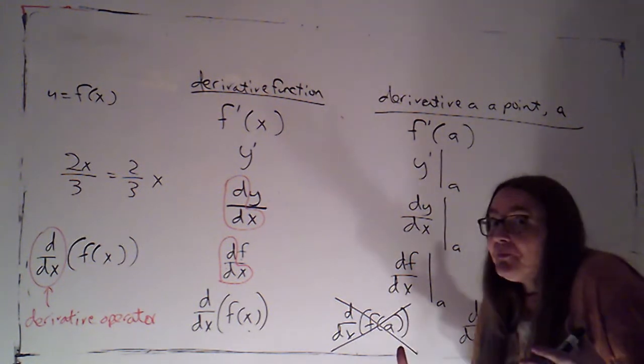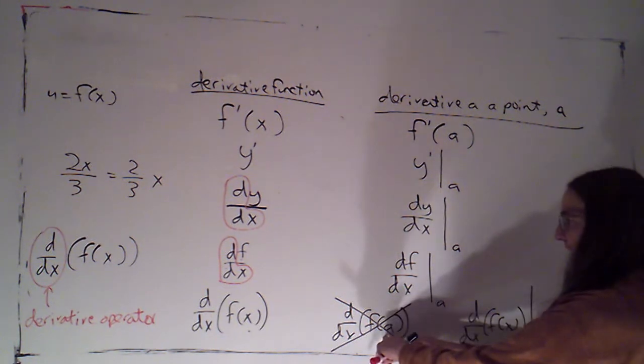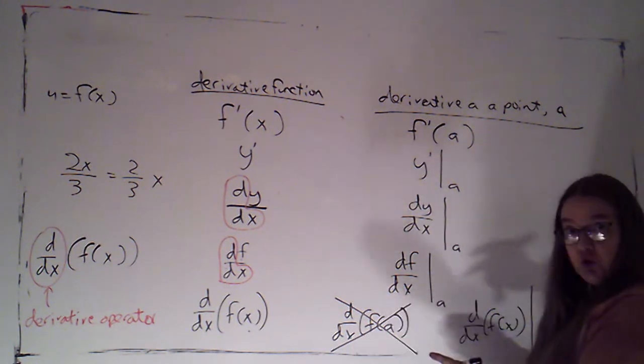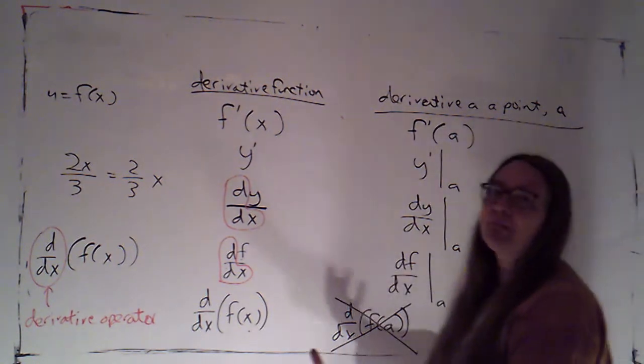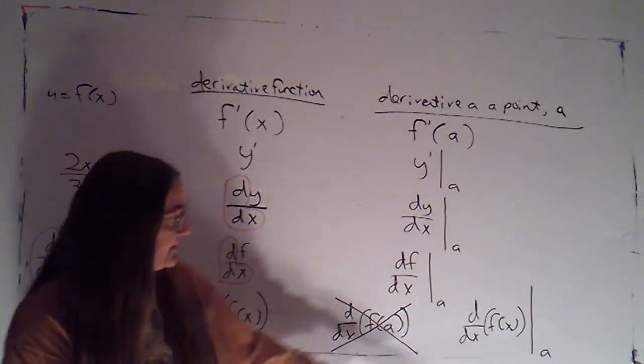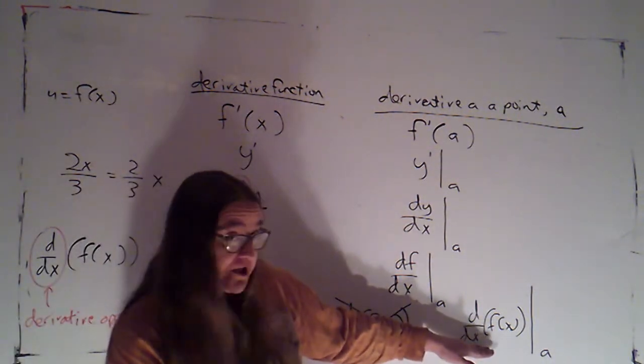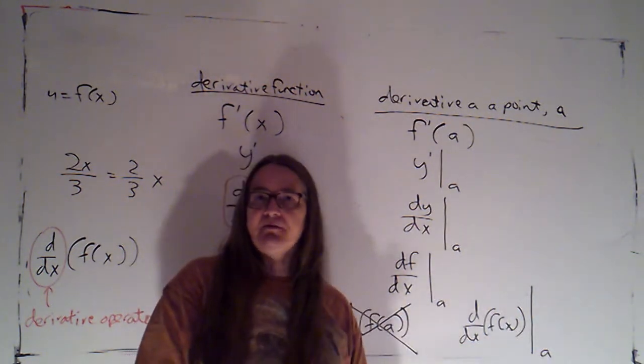I've gone from a function that's potentially changing that takes on different values for x to something that's constant. f of a is just a number. Maybe f of a is two. So if I plugged in a first, I'd be saying, what's the derivative of two? Instead of what's the derivative of this function that happens to give me two at this particular point. So very important, this says take the derivative first, then plug in a to that derivative function.